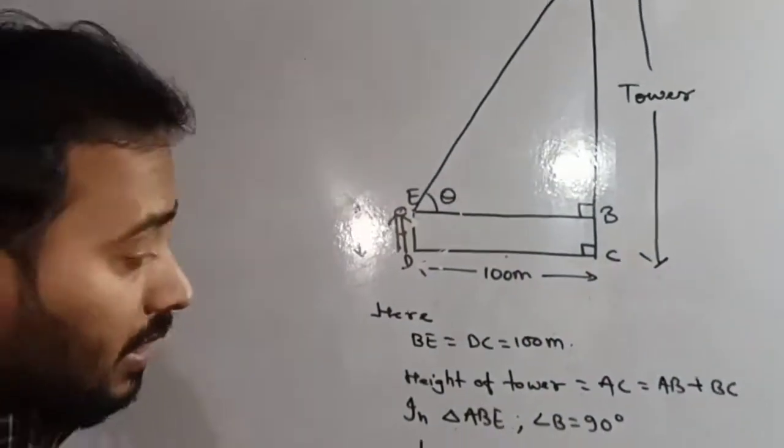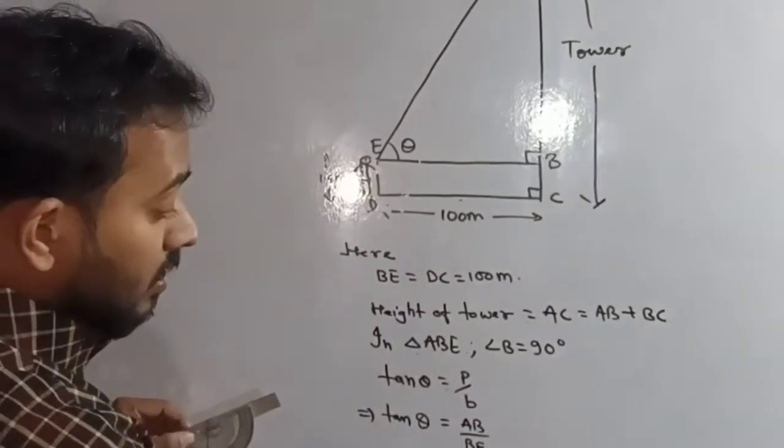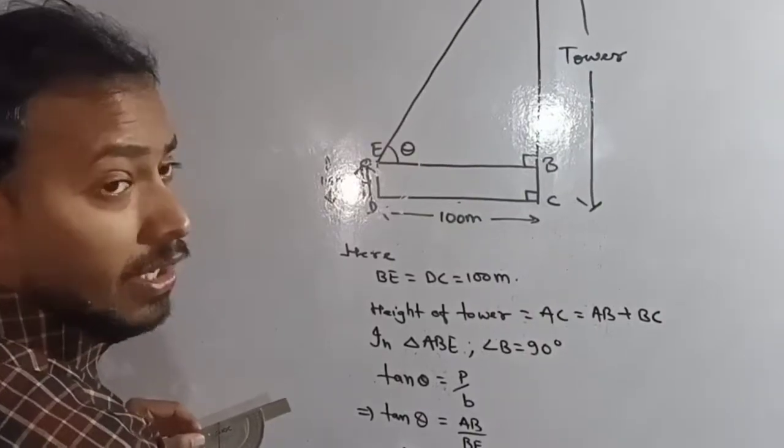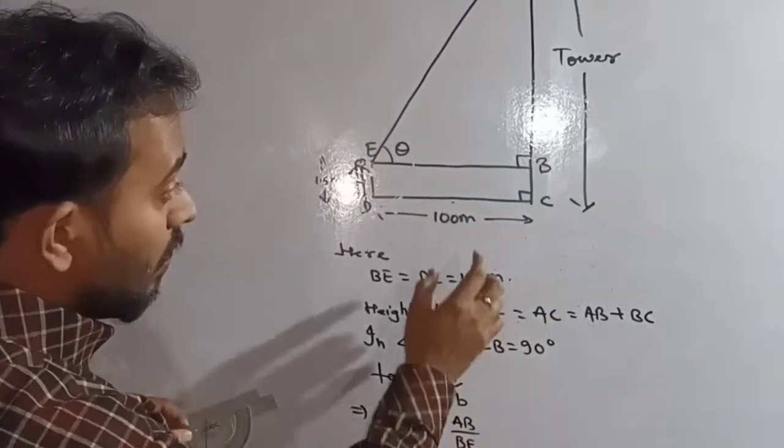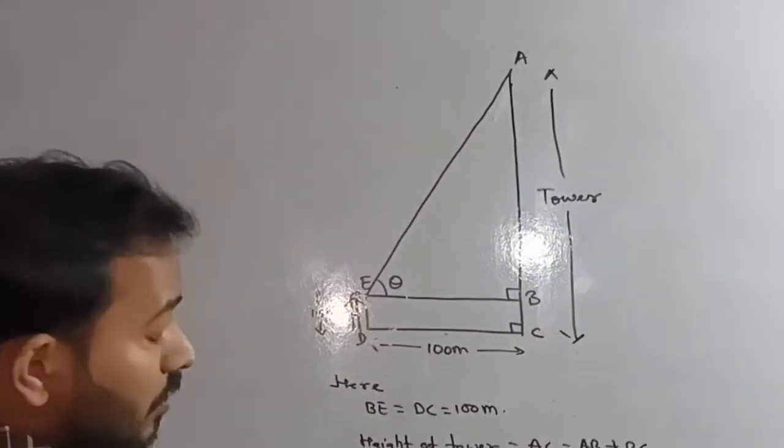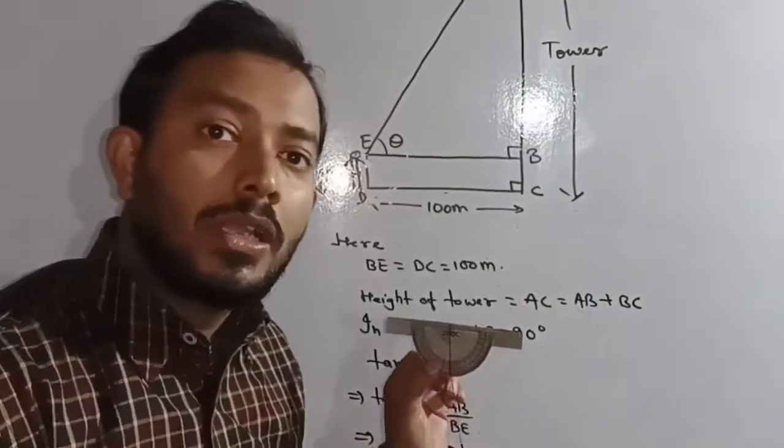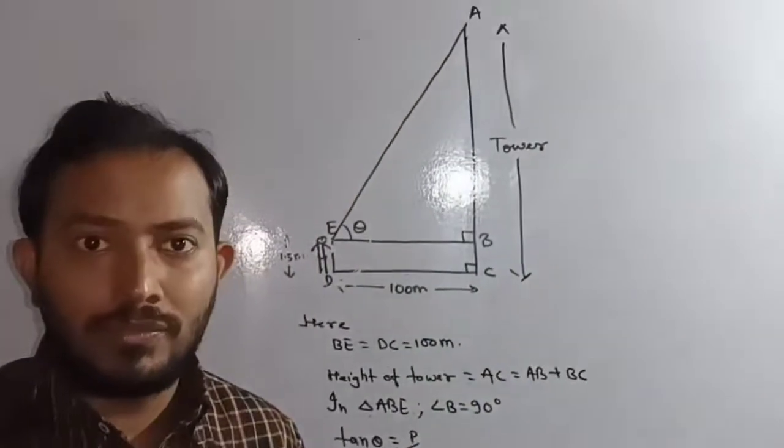Root 3 times BE will be 100. Multiply, you will get the value of AB. And then substitute, you will get the height of the tower. This is the application of the clinometer. I hope it is clear to all of you. Thank you, everyone.